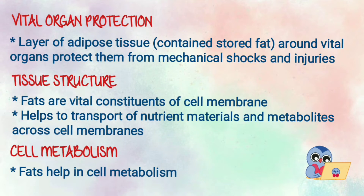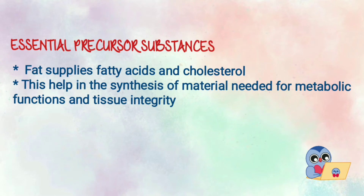Fifth is tissue structure. Fat is an important constituent of our cell membrane and it helps to transport nutrient materials and metabolites across the cell membrane. Sixth is cell metabolism — fat plays an important role in cell metabolism. The seventh function is essential precursor substances: fat in our body supplies fatty acids and cholesterol, which are necessary for the synthesis of many materials needed for metabolic functions and tissue integrity of our body.